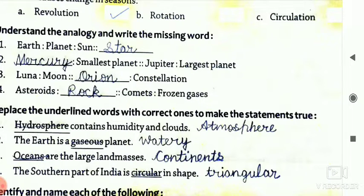Next one is here. Luna: moon. So constellation - you have to write a name of a constellation. Constellation means a group of stars. So your answer is Orion. Next, asteroids: rock. And comets are? Frozen gases.